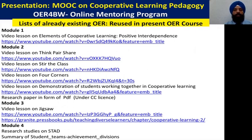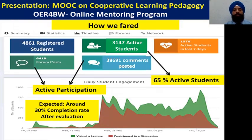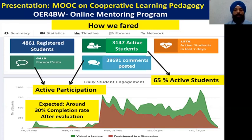There was provision for students to track their progress. This is the list of already existing OER which were used in the present course. The figures clearly show that we were able to get attention of 4,861 students who registered with us on MOOCit platform. Out of these, 3,147 were active students throughout the course, which was an encouraging figure. We conducted a pre-course survey where we came to know that many participants had no prior experience with any MOOC. You can see 38,691 comments posted by participants and 6,419 forums created by them, showing active participation.